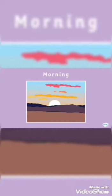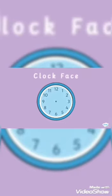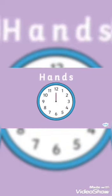We tell the time so we know when different events happen throughout the day, whether during the morning, noon, evening, or night. This is an analogue clock. The blue highlighted area is called the clock face, and the red lines are called hands.